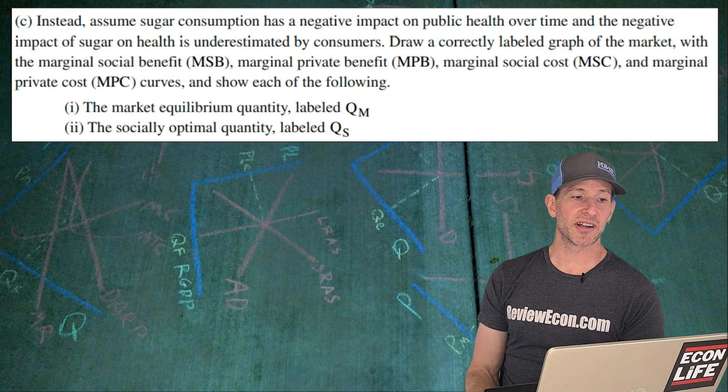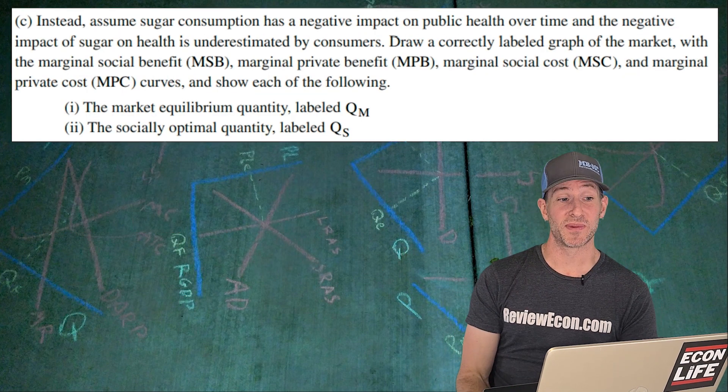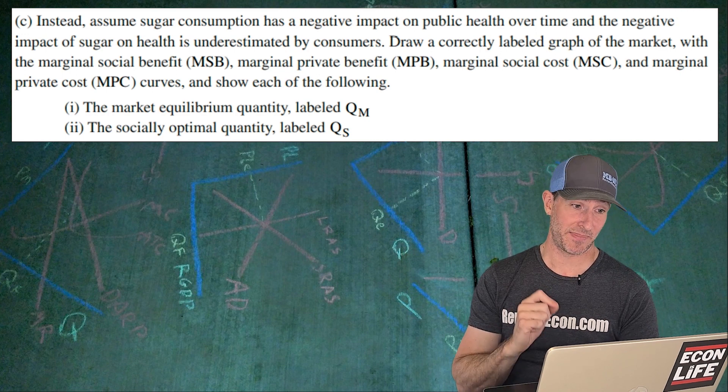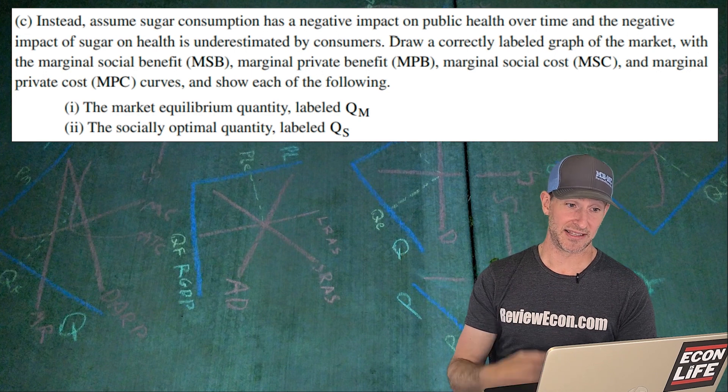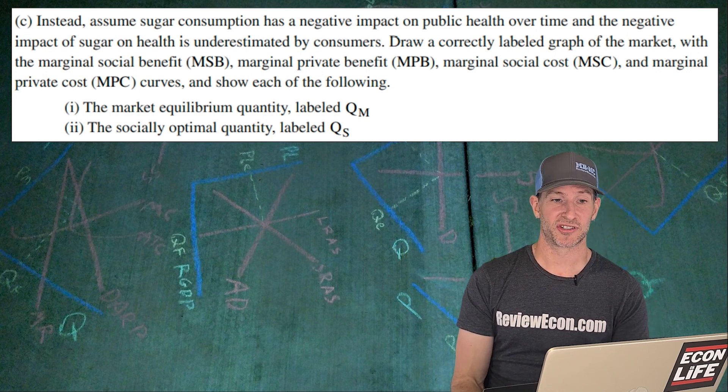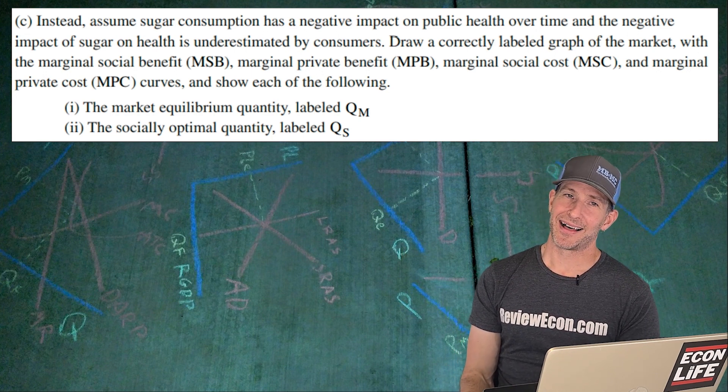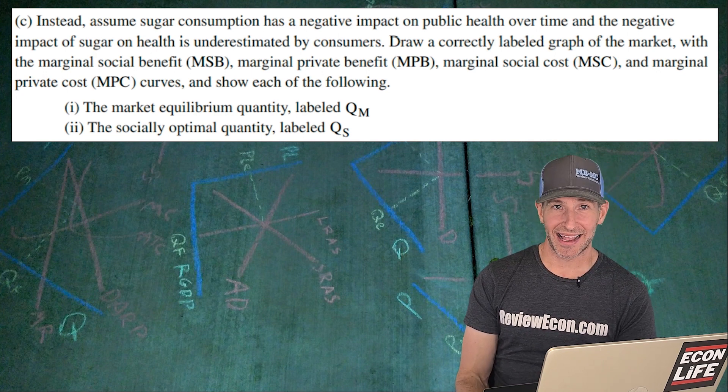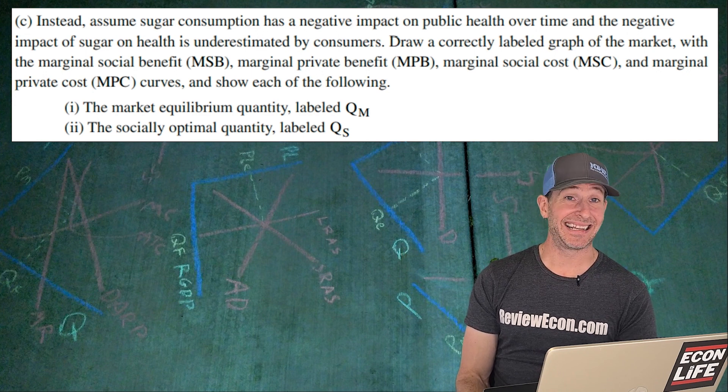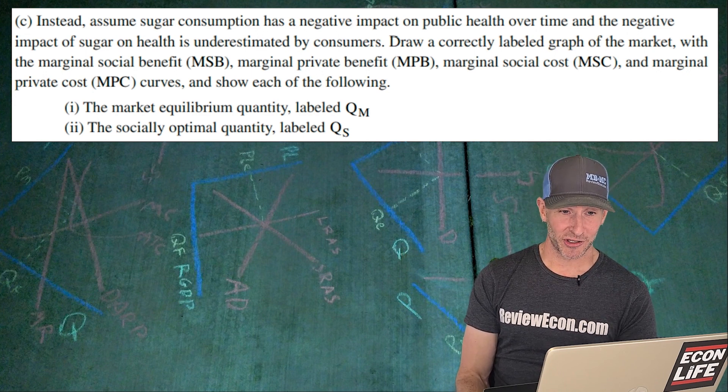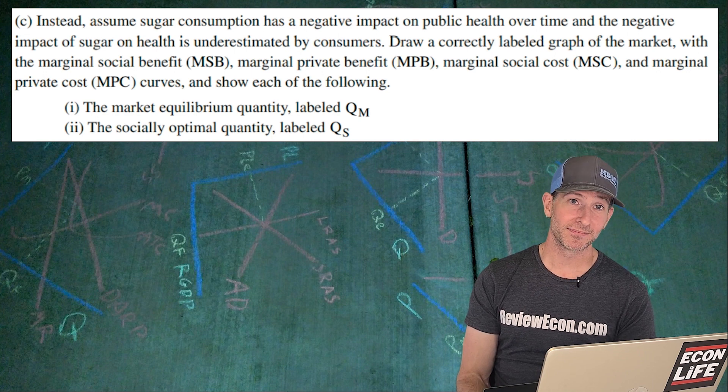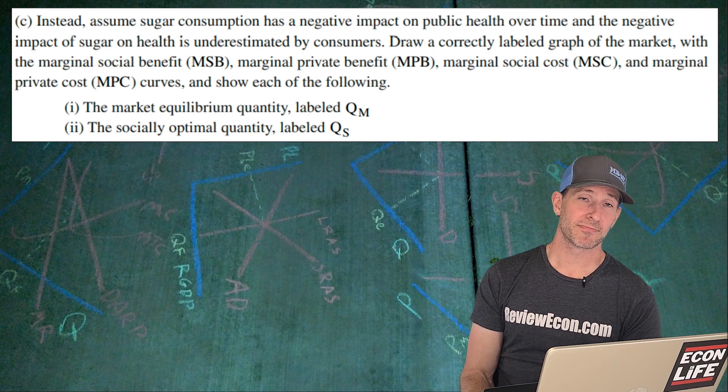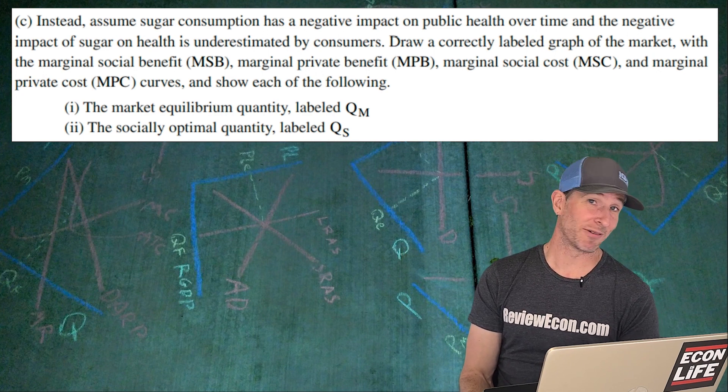On to C. Instead, we're going to assume that sugar consumption has a negative impact on public health over time, and the negative impact of sugar on health is underestimated by consumers. This is a huge curveball. This is the first time they've ever had people draw a negative externality in consumption here. If you've struggled to do this, don't worry. I expect most of my students will have struggled to do this as well. I wouldn't stress too much. It'll be probably one point for having it drawn exactly correct.